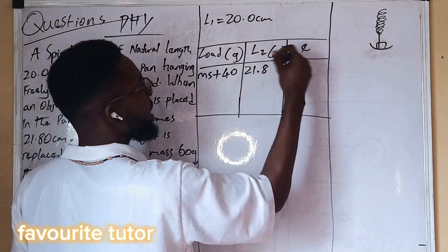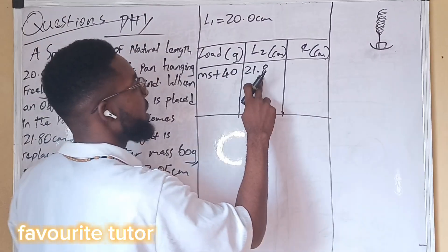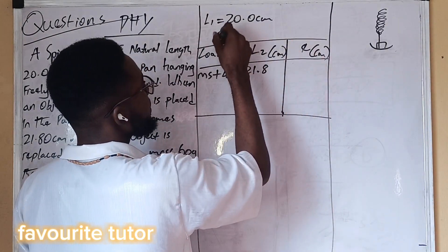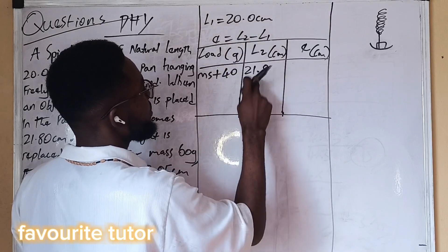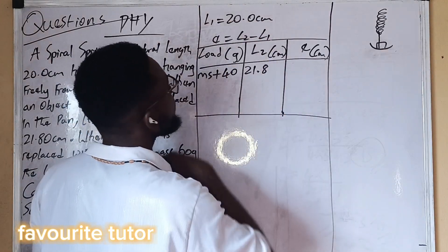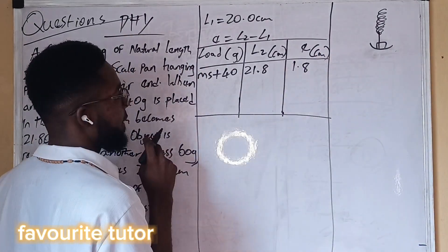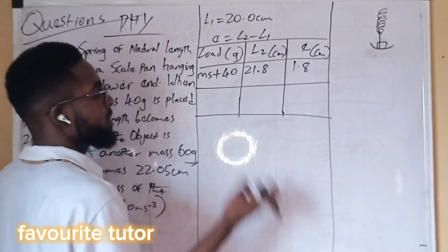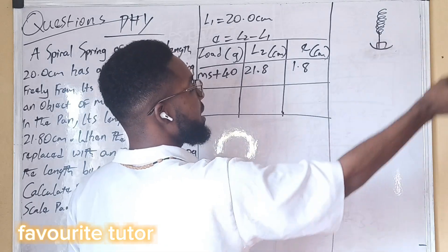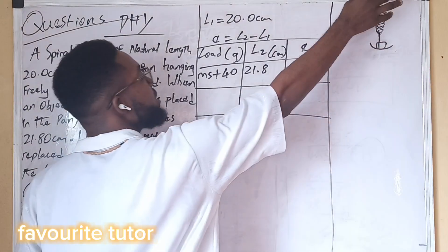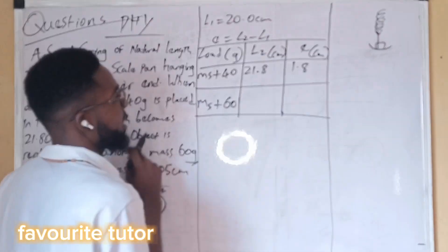The load is in grams and the new length is in centimeters, so the extension will also be in centimeters. The extension equals the new length minus the original natural length. So 21.8 minus 20.0 gives 1.8 centimeters as the first extension. For the second case, the load on the spring is the mass of the scale pan plus 60 grams.